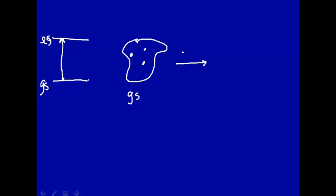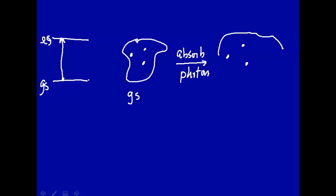We're now going to absorb a photon — we're looking at absorption here. We're going to make the assumption that the electrons will move much more quickly than the nuclei, so right after we absorb that photon, we'll have the nuclei in the same place, but the electronic distribution may be different. The electrons absorb the photon and redistribute themselves in a different way.